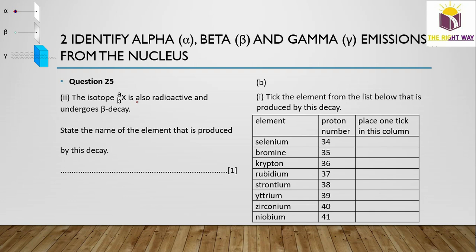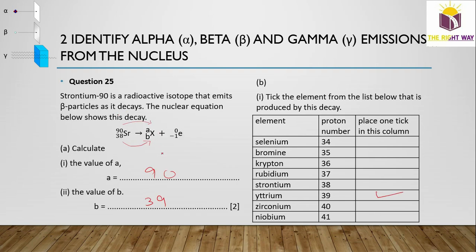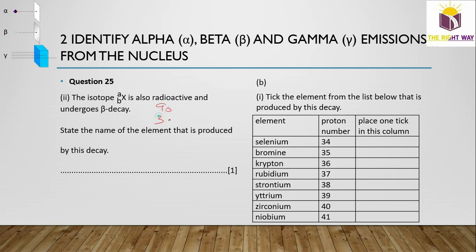Question 25b: The isotope ⁹⁰₃₉Y undergoes beta decay. The atomic number increases from 39 to 40, while the mass number remains 90. The element with atomic number 40 is zirconium. So zirconium is produced by this decay.